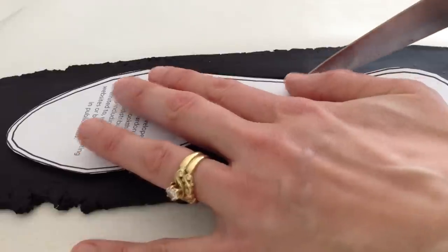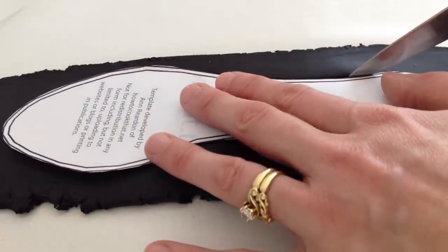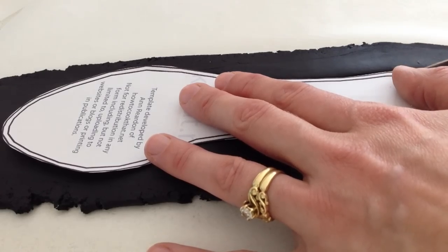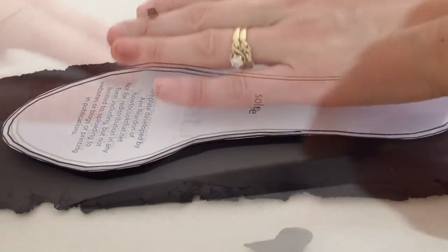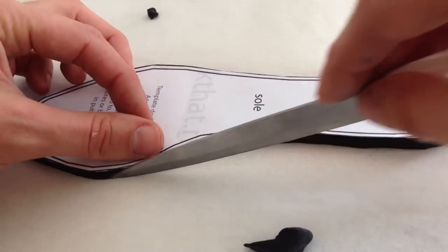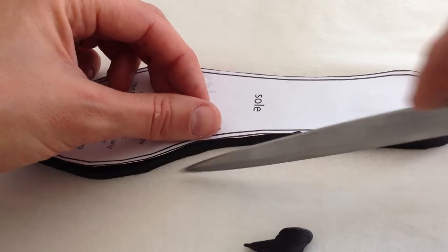Next, roll out some black fondant to be half a centimeter thick and cut around the outer sole template line. After you have cut it, run the flat edge of your knife around it to smooth off any imperfections.